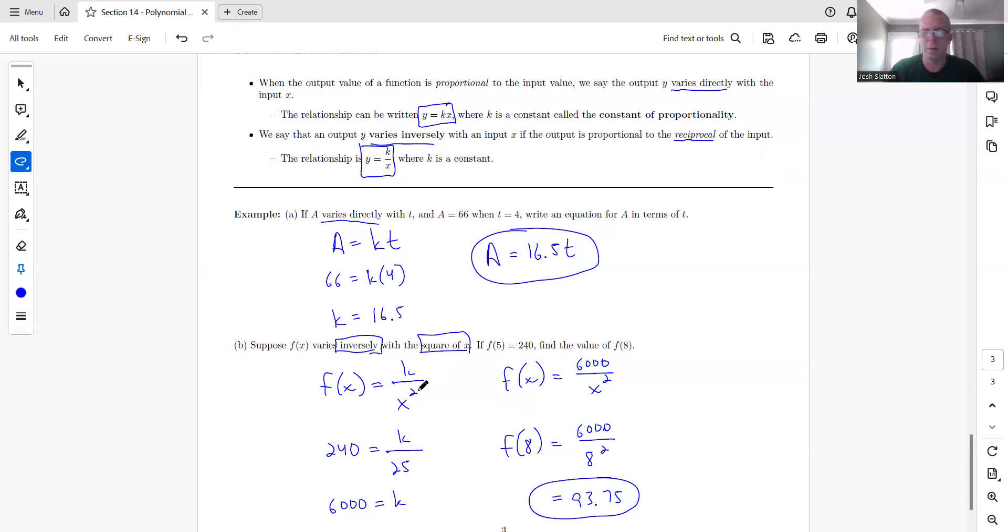Whatever this is, that tells you what the exponent of X is. So it could be anything, I guess. Could be the square root. Could be the cube root. Could be the fourth, X to the fourth, fourth power of X. But whatever it says there, that's what you put for the X. And if inversely means X is in the bottom. Directly means X is in the top, or T as the case may be. All right. So that's it for the 1.4. Let me know if you have any questions.